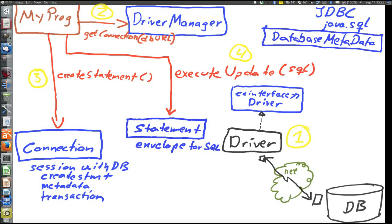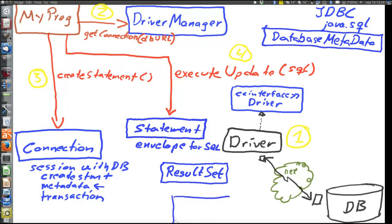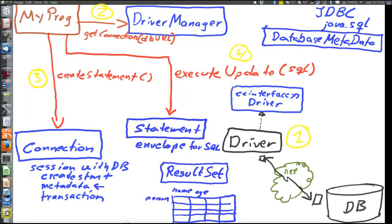We can get a DatabaseMetaData object from the connection by calling the getMetaData method. The ResultSet is a table-like structure which contains data retrieved either from the DatabaseMetaData object or, more commonly, by sending an SQL SELECT statement to the database. It holds a kind of table with columns, where each column is a particular data field and each row is a particular instance. If we search for persons, the columns are name, age, phone, and each row represents one individual person — one entry from the database.